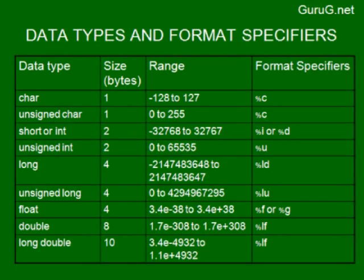Short int has a size of 2 bytes and ranges from -32,768 to +32,767, using %i or %d as format specifier. Unsigned int also has two bytes, ranging from 0 to 65,535, using %u. Long int is 4 bytes with its respective range, using %ld as format specifier. Unsigned long is also 4 bytes, using %lu.